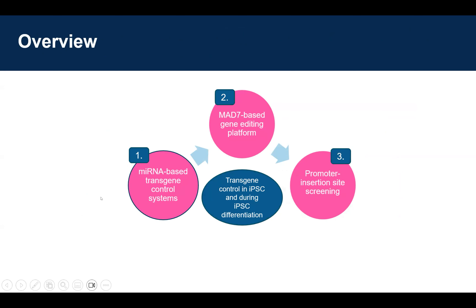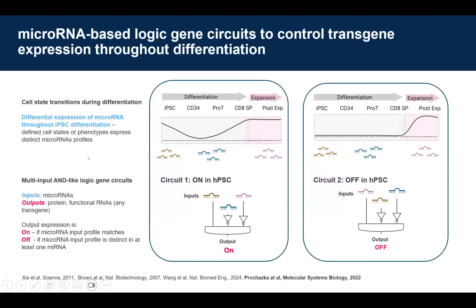Going back a few years — before we were thinking about iPSC-derived CAR-T cells — we were thinking about general ways to control transgene dynamics and dose during differentiation using microRNA-based logic gene circuits. These circuits make use of the fact that microRNAs are differentially expressed throughout cell differentiation as cells change their state and phenotype. Such circuits are designed to recognize a specific set of microRNAs as inputs, integrated in an AND-like logic function to produce and control a desired output protein — our transgene.